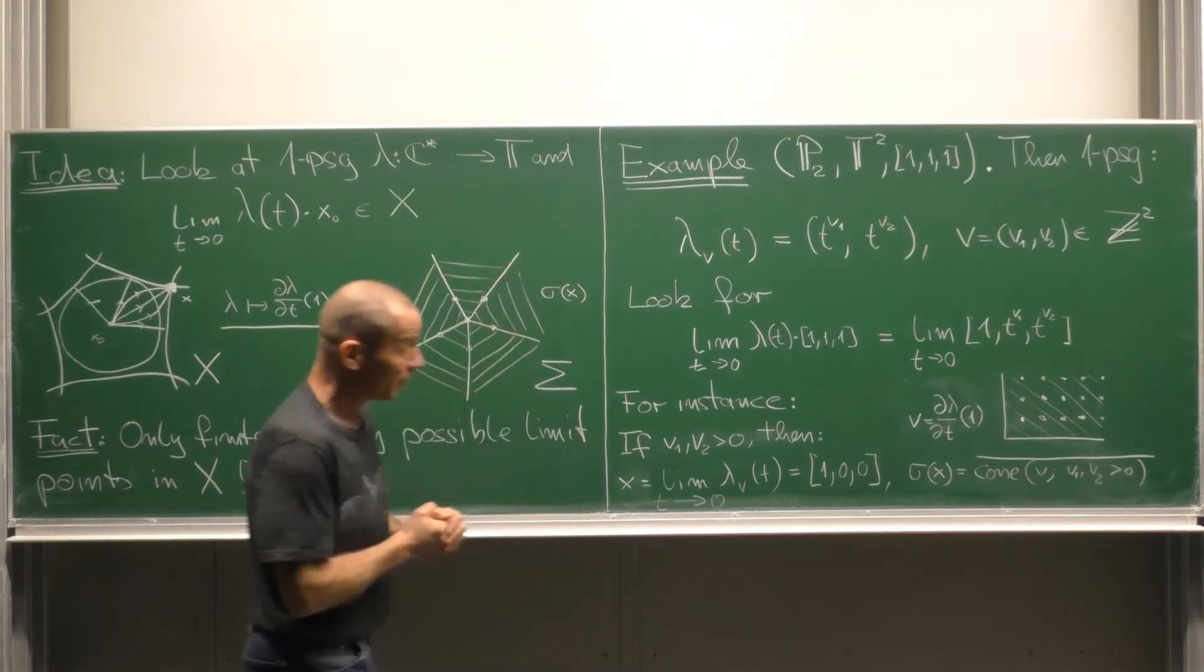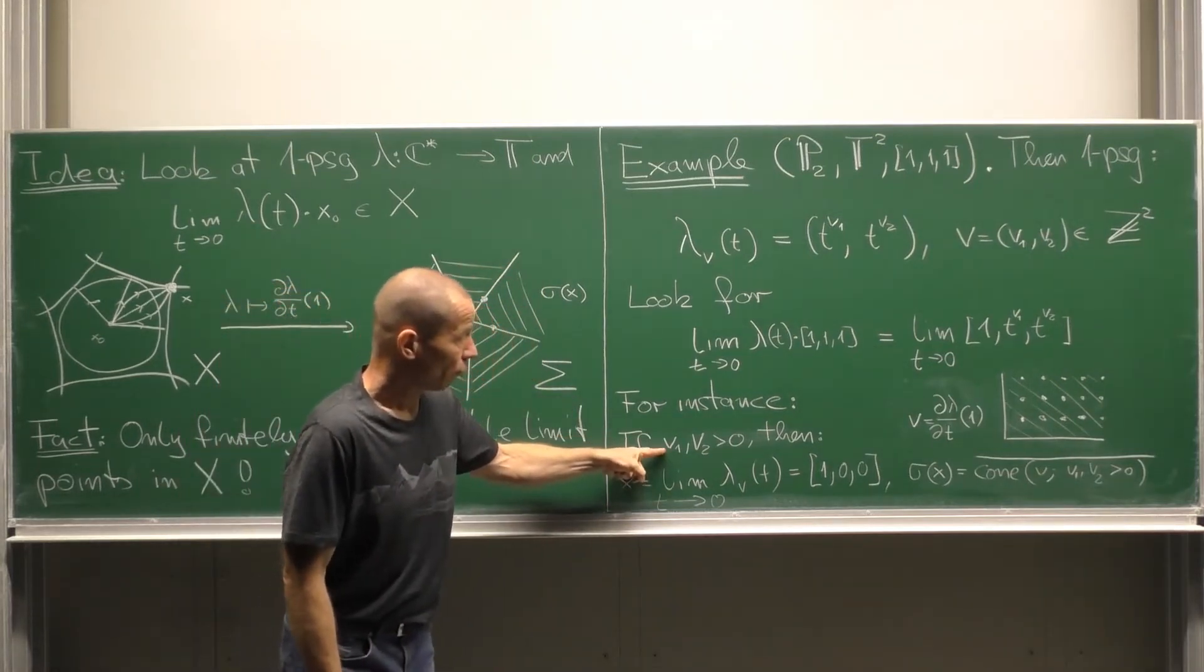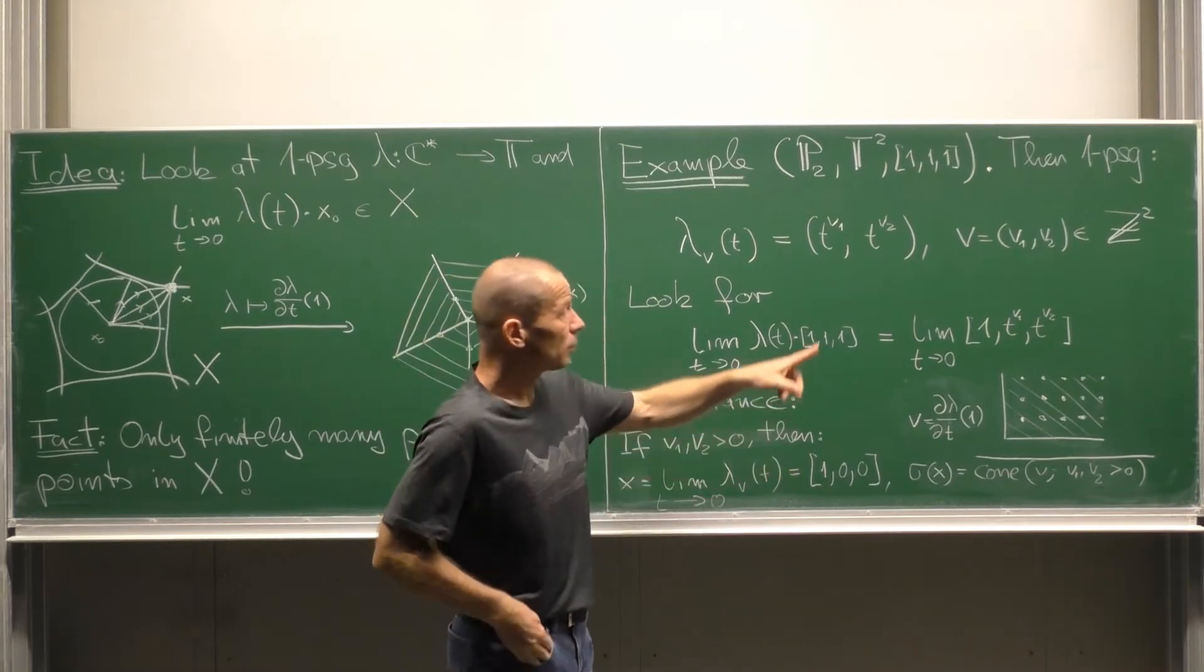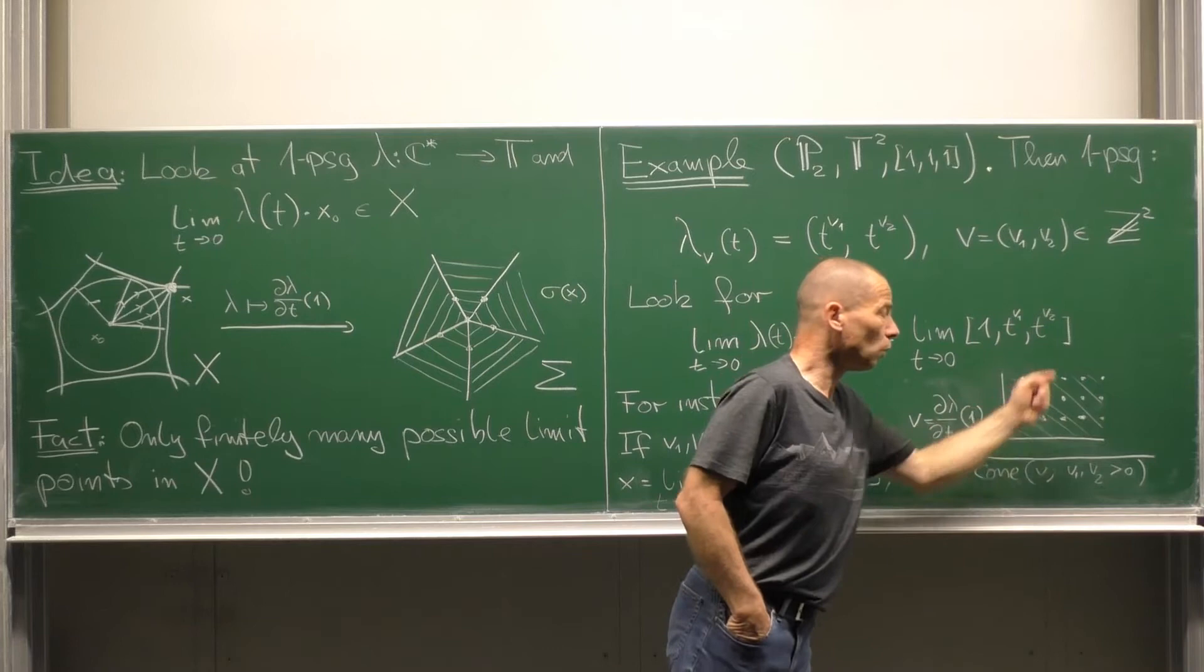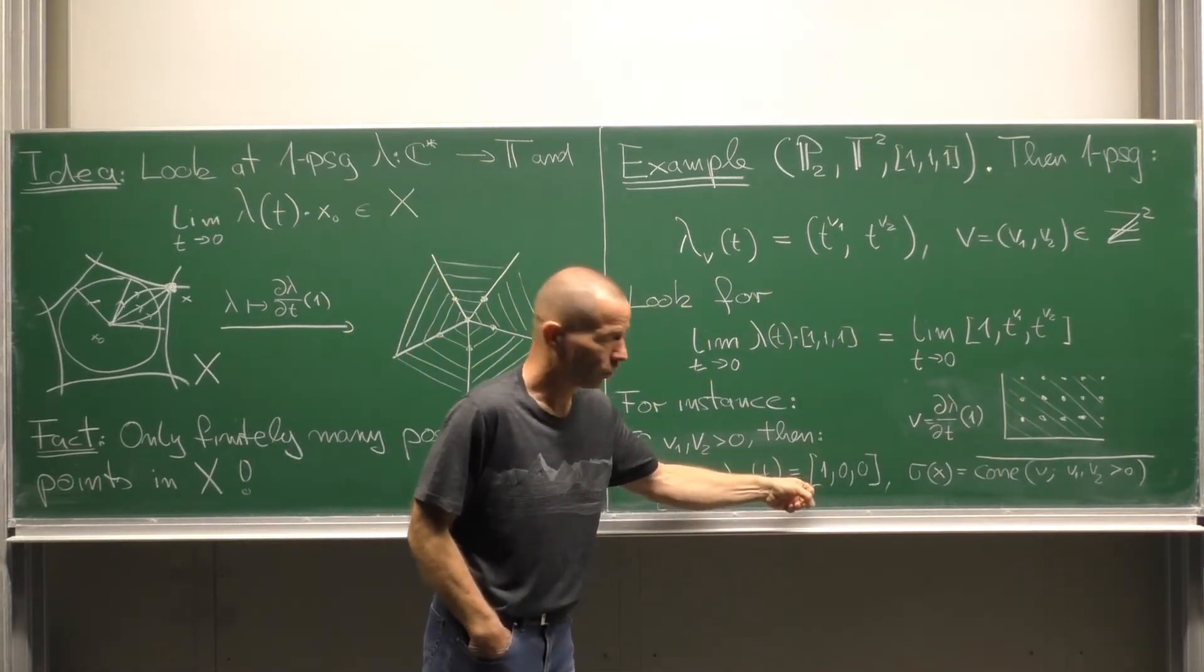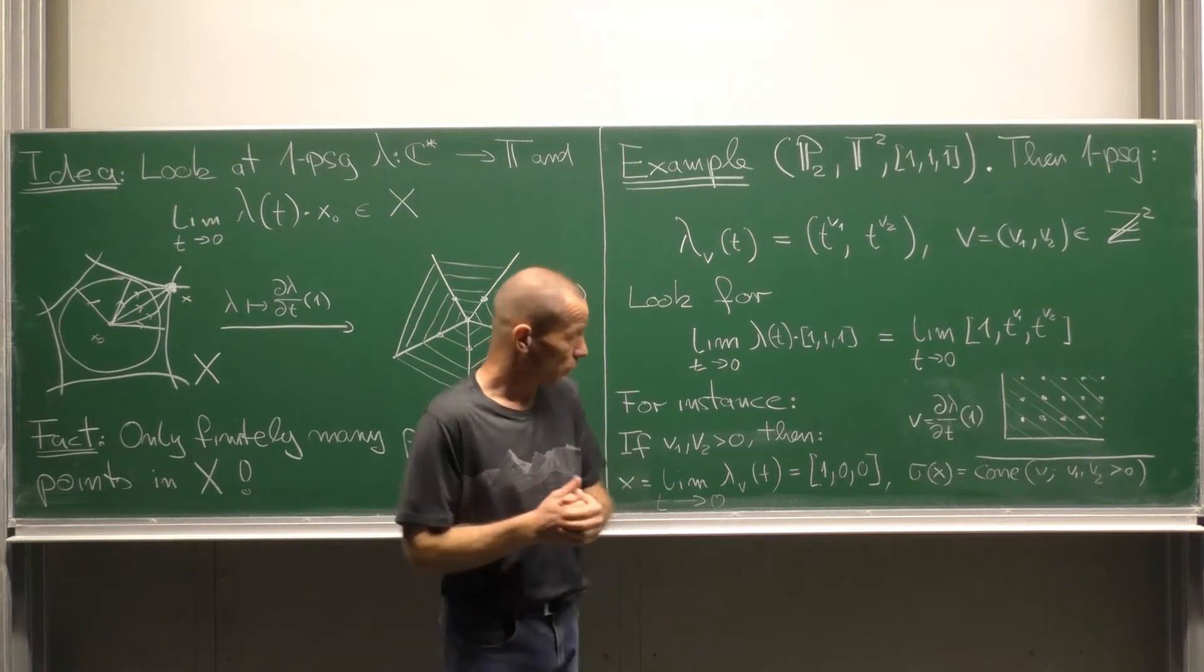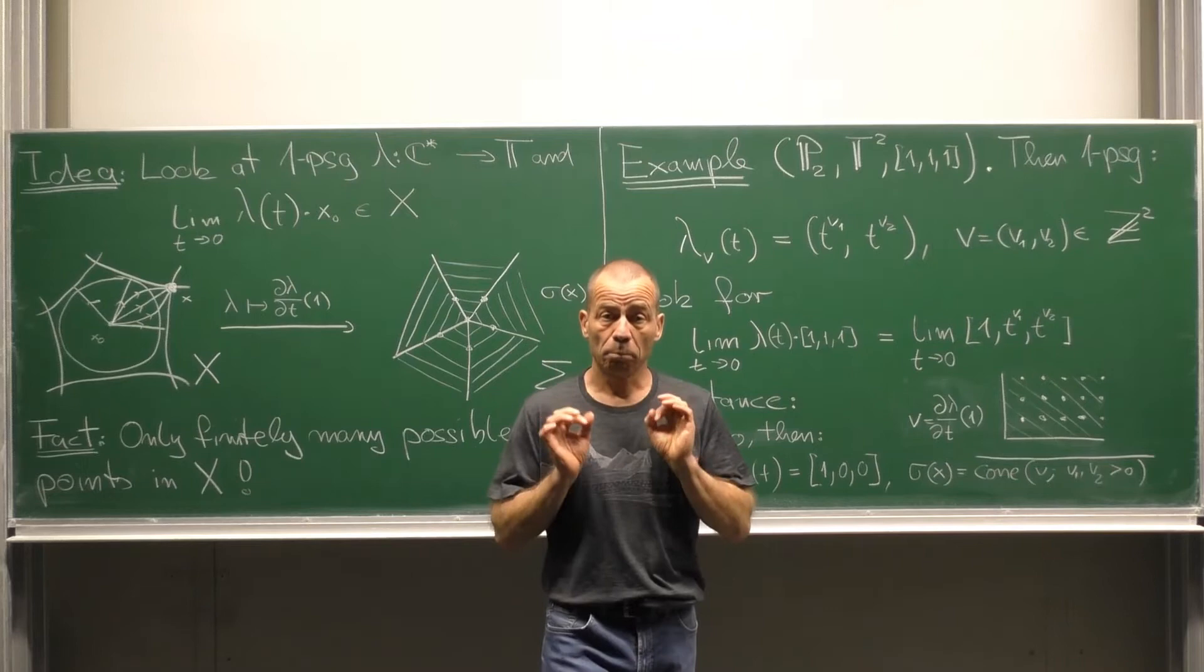Here is a concrete case. For instance, if V1 V2 both are positive then if T tends to zero this gets small and as a limit we obtain the point with the homogeneous coordinates 1,0,0. This happens for all lambda V where the two entries are positive.